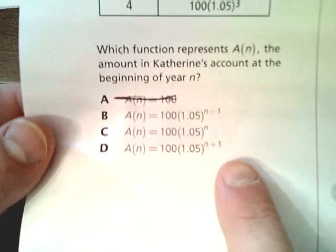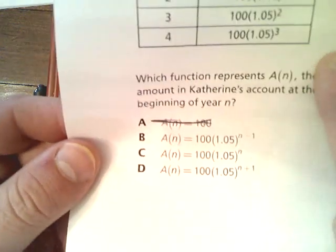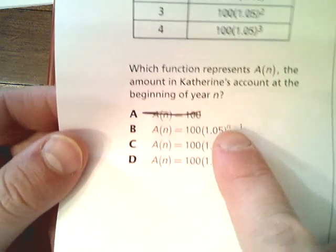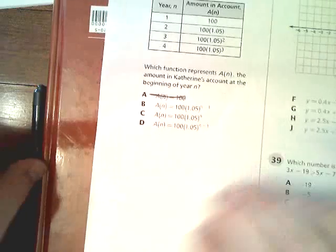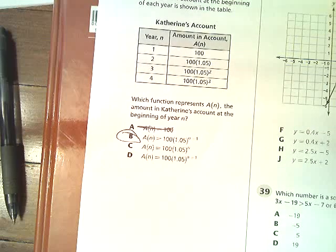An exponent of n plus 1 would give you 1 more than needed — so in year 4, it would be 5, but the table says 3. So your answer has to be B. You didn't even really have to think on that one. Just look logically at what the question says.